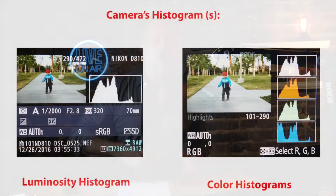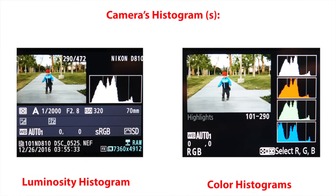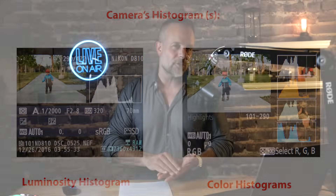Histograms aren't just for overall brightness — they can also help you with color and luminosity. Many cameras allow you to view separate RGB histograms showing red, green, and blue channel distribution. This can be really useful when you want to make sure your colors are balanced or avoid color clipping in bright highlights.